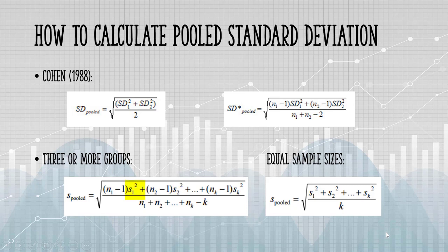For example, S-sub-1-squared is the sample standard deviation for the first sample. n is the number of measurements in each sample, and you subtract k, which is the number of samples.